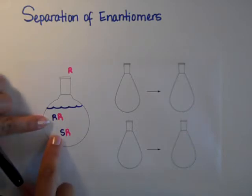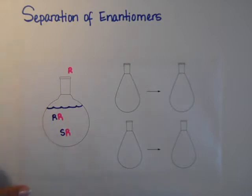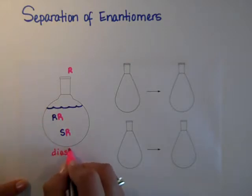So now notice I have the RR and the SR, and just by that chemical reaction, now I converted my enantiomers into diastereomers.